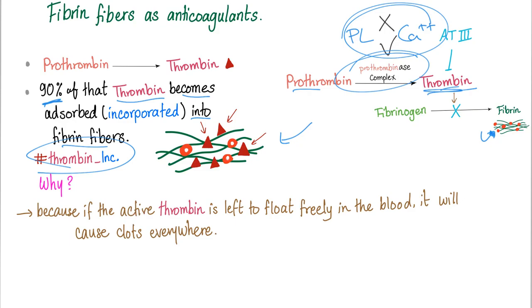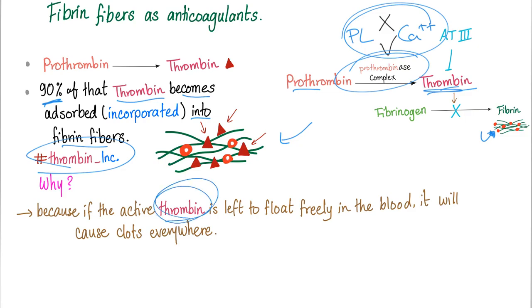Why do we do that? Because if active thrombin is left to float freely in the blood, it will go around causing clots everywhere — because it's active. Note: I said thrombin, not prothrombin. Prothrombin floating around is fine because it requires the entire prothrombinase complex and the intrinsic or extrinsic pathway to be activated, which only happens during real trauma. But active thrombin floating freely will convert fibrinogen into fibrin, causing clots in your brain, heart, legs, and everywhere.